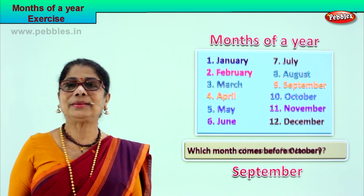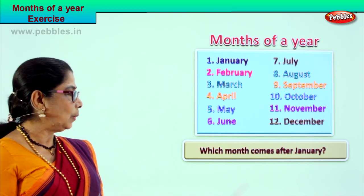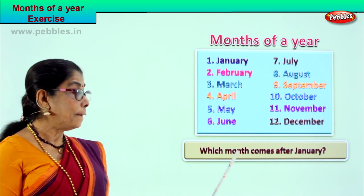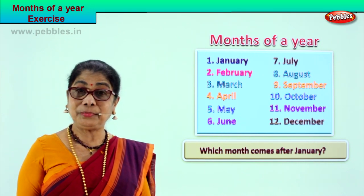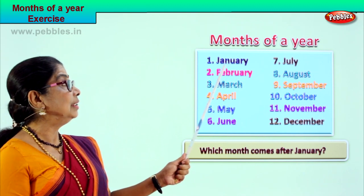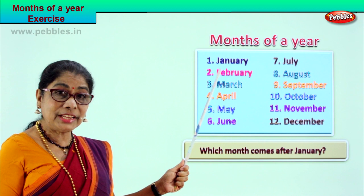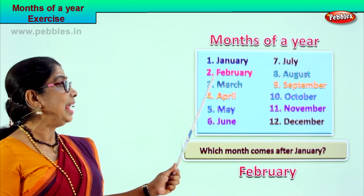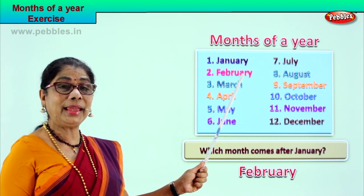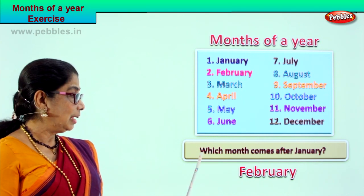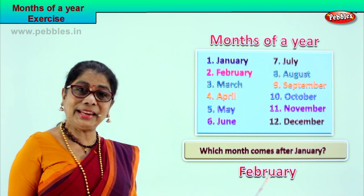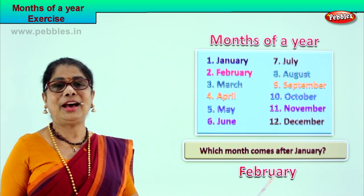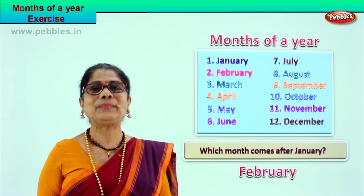Shall we take another question? Here we are. Read the question with me: which month comes after January? Which is the first month of the year? January. Which month comes after January? February. After January comes February. Spell February: F-E-B-R-U-A-R-Y. Which month comes after January? February. Did you enjoy the exercise?